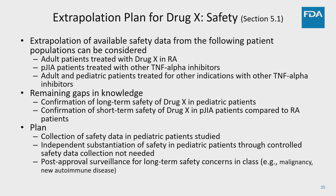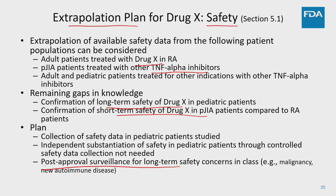In addition to extrapolation using PK matching, the plan needs to address safety data collection. We have some confidence that adults have already been treated with Drug X, and PJIA patients have been treated with other TNF-alphas, and the data in adults looks similar. But we need to confirm the long-term and short-term safety of this new drug in patients with PJIA. The plan would potentially collect safety data in the patients already studied in the PK study, and include longer-term safety as part of a surveillance approach, possibly long-term post-approval.